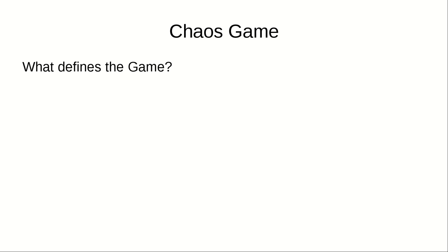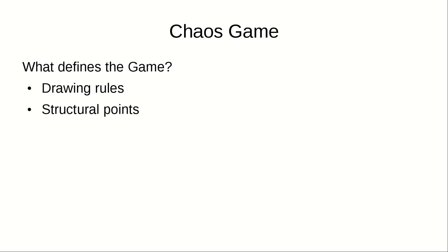First let's try to generalize the simple version of Chaos Game I described in the previous video. If you don't know about it, please click the link below to watch that part. There are three important variables that determine the outcome of the game: drawing rules, the set of structural points, and the number of iterations. By drawing rules, I mean the distance that will be traveled from the previous point to the new point at each iteration.